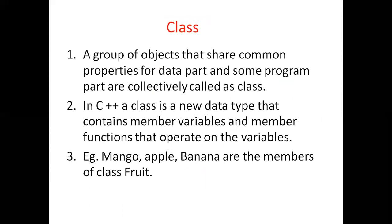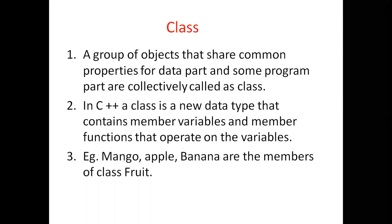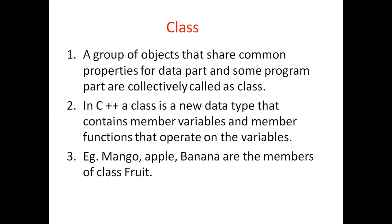Class is very important for C++. In C++, class plays a very important role in object-oriented programming. What is a class? A group of objects that share common property for data parts and program parts are called classes. For example, consider a fruit class — there is one class called Fruits, and the objects are apple, mango, papaya, banana. These are the objects of the fruit class. For a single class, you can make a number of objects.